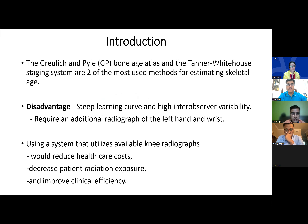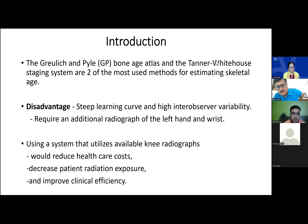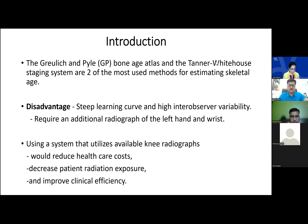The Greulich and Pyle bone age atlas and Tanner-Whitehouse staging system are the two most commonly used methods for estimating skeletal age. Their disadvantages include a steep learning curve, high inter-observer variability, and the requirement of an additional hand and wrist x-ray apart from the area of interest. Using a system that utilizes available knee radiographs reduces healthcare cost, decreases radiation exposure, and improves clinical efficiency.